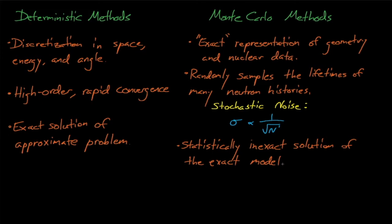So in contrast to deterministic methods, Monte Carlo methods give you an inexact, stochastically noisy solution to an exact representation of your problem. With enough histories and enough runtime, Monte Carlo codes will converge to the true behavior, whereas deterministic codes will always converge to an approximation. Thus, the criticality safety community tends to prefer Monte Carlo codes because they contain no innate method bias.